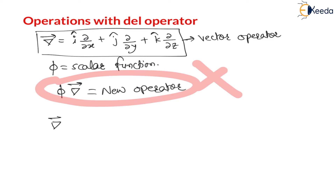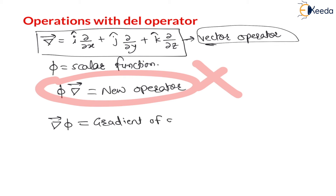If the del operator is written first and multiplied with scalar function phi, then this is the del operator applied on the scalar function. This is called the gradient of scalar function phi. Whenever the vector operator del is applied on a scalar function, it gives the gradient of phi, and this gradient is always a vector quantity.